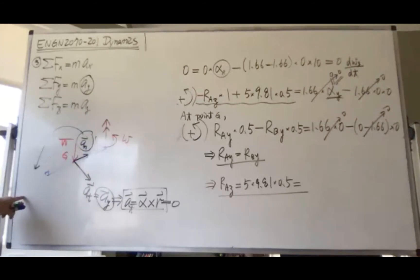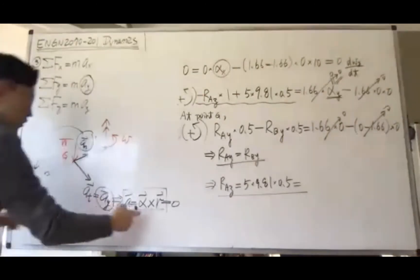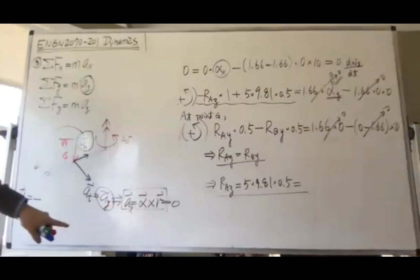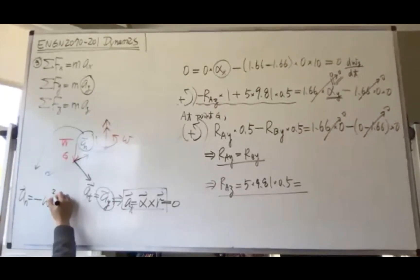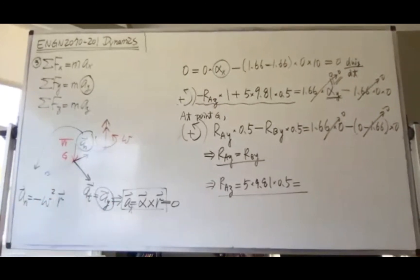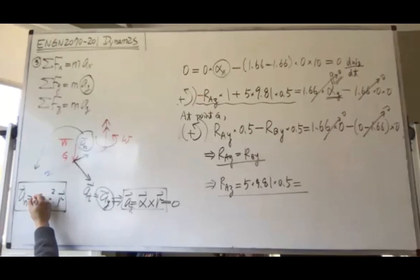Your a_n is negative omega squared times r. Please do not forget about this negative sign—this is very important.